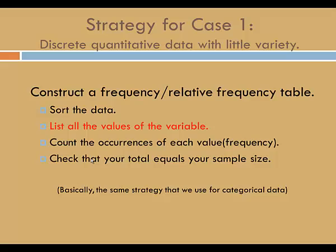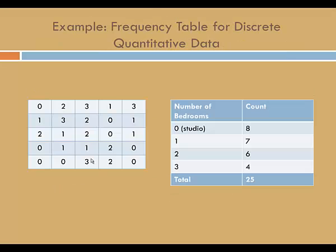Let's start with a strategy for case 1, when we have discrete quantitative data with little variety. Our strategy is to construct a frequency or relative frequency table. In case 1, that's a fairly easy task. First, we'll need to sort the data. Then we can list all the values of the variable. We'll count the occurrences of each value. That'll give us the frequency. And then finally we'll want to check to make sure that the total of our counts equals our sample size. So basically, this is the same strategy that we use for categorical data.